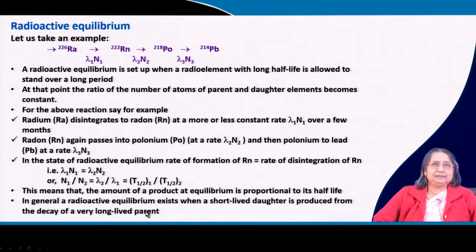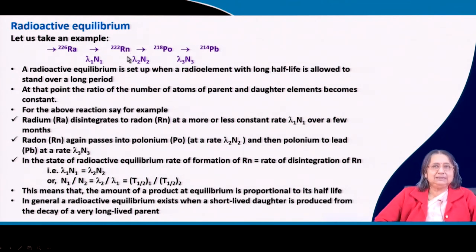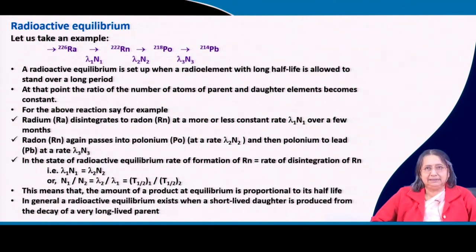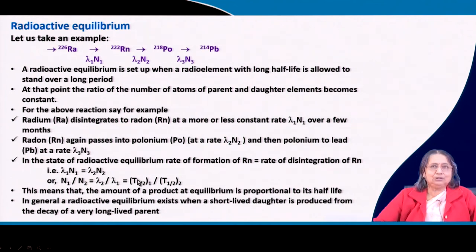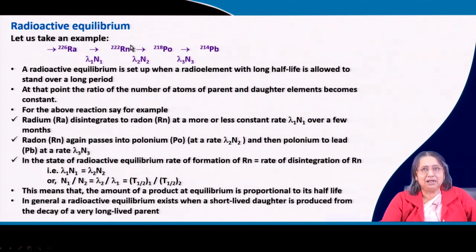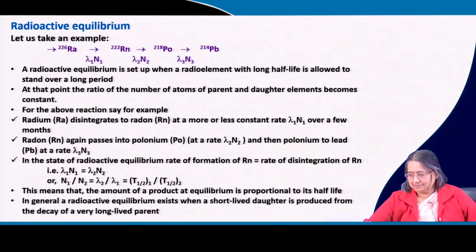At equilibrium, N is proportional to T½: the amount of a species present at equilibrium is proportional to its half-life. If the half-life is greater, N will be greater. So N₁ is proportional to T½₁ — this is a very interesting result from radioactive equilibrium.